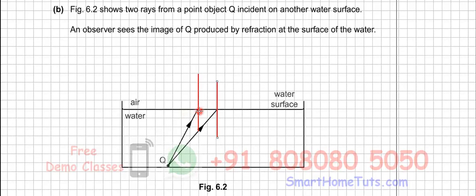Okay, now because this ray is going to travel from water to air, that is denser medium to rarer medium, therefore it is going to bend away from the normal. So these rays are going to bend away from the normal.